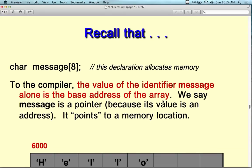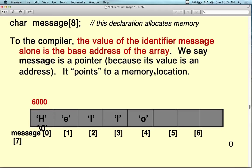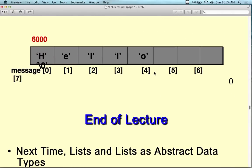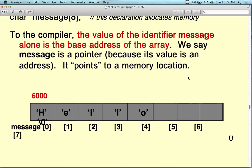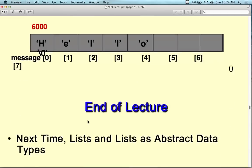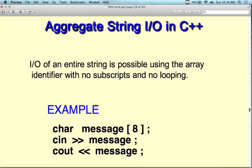Recall from our previous example that the value of the identifier message alone is the base address of the array — so message is a pointer because its value is an address pointing to memory. Each one of the spaces is an index value as if it were a character array, which is helpful to remember. We can also do aggregate string IO in C++ — taking IO of an entire string using an array identifier with no subscripts and no looping.